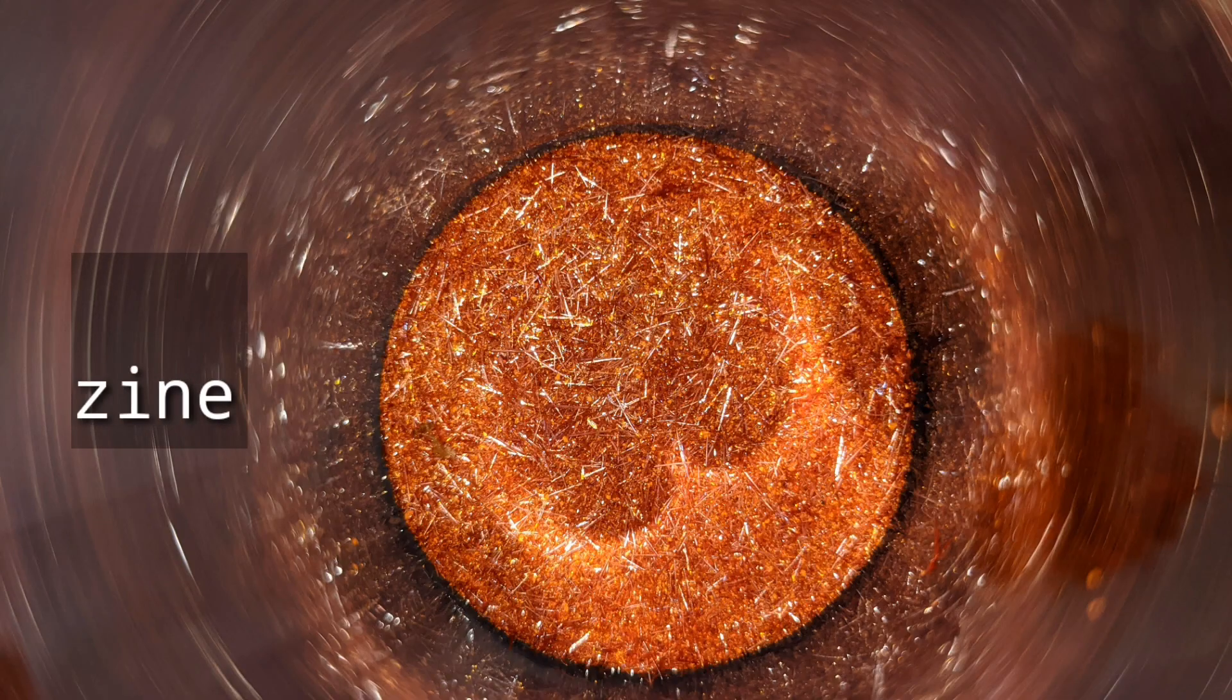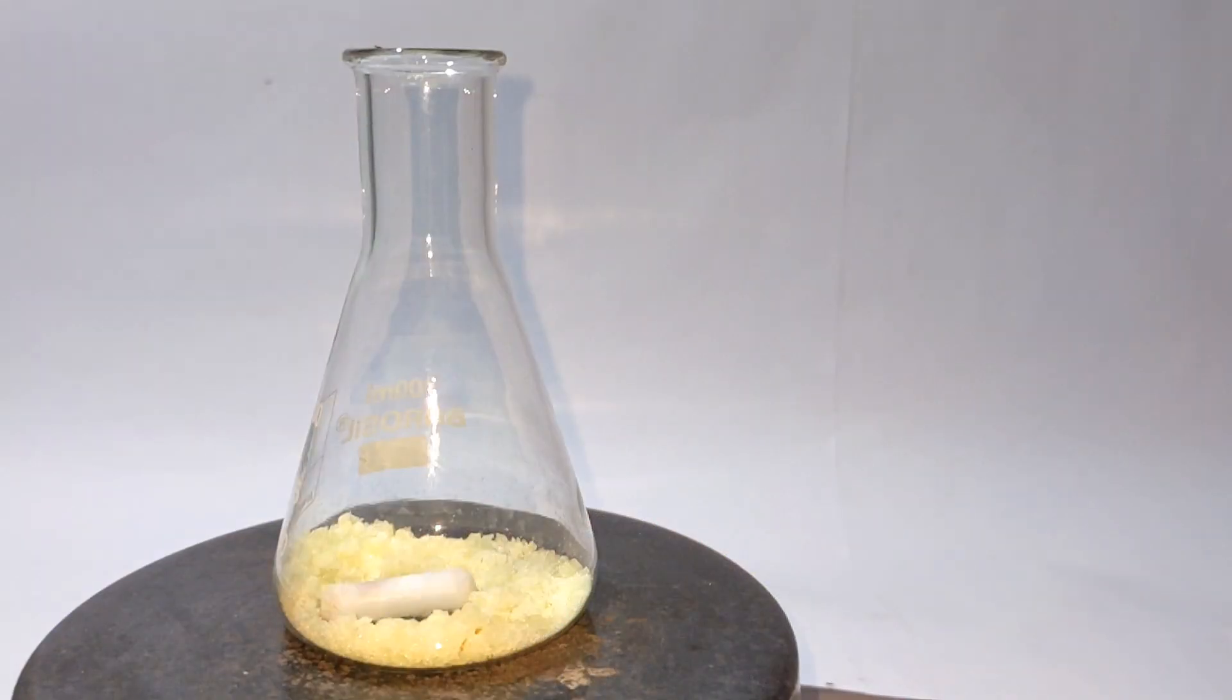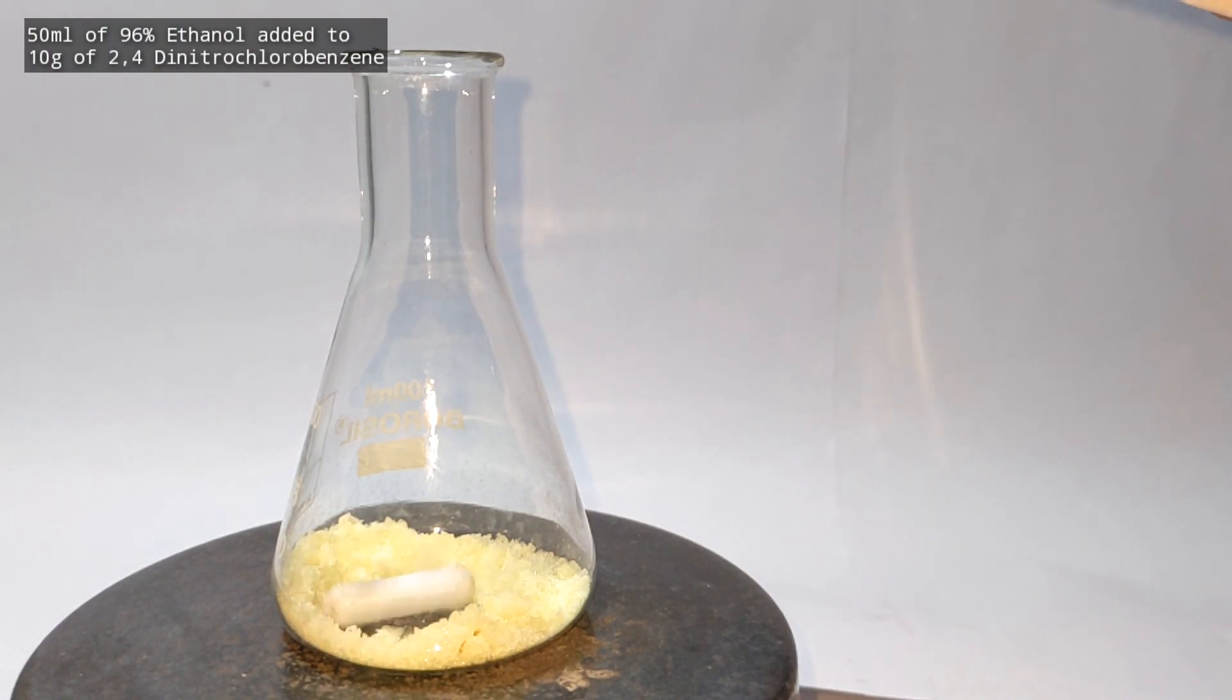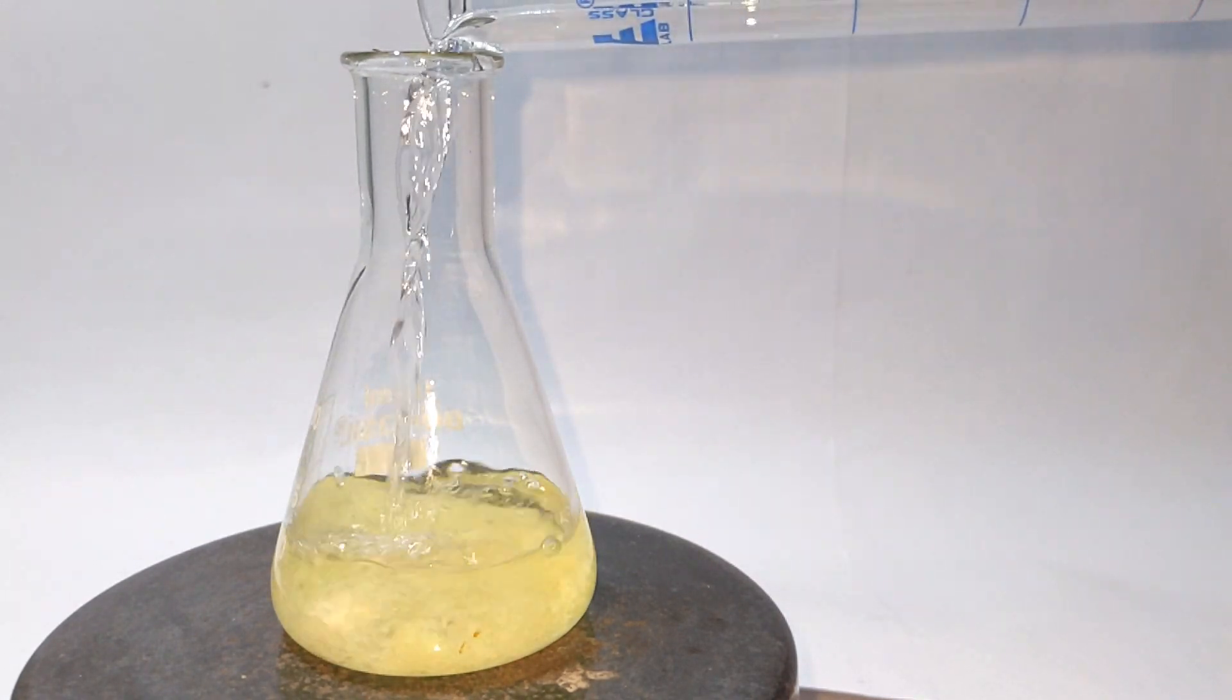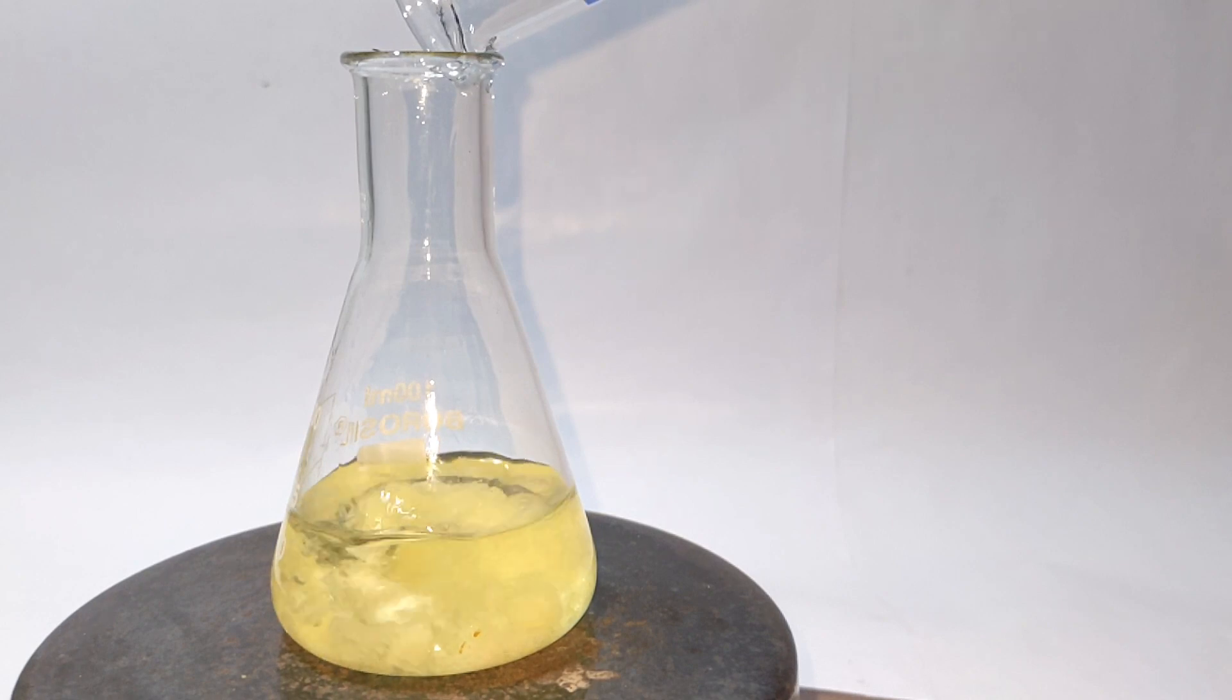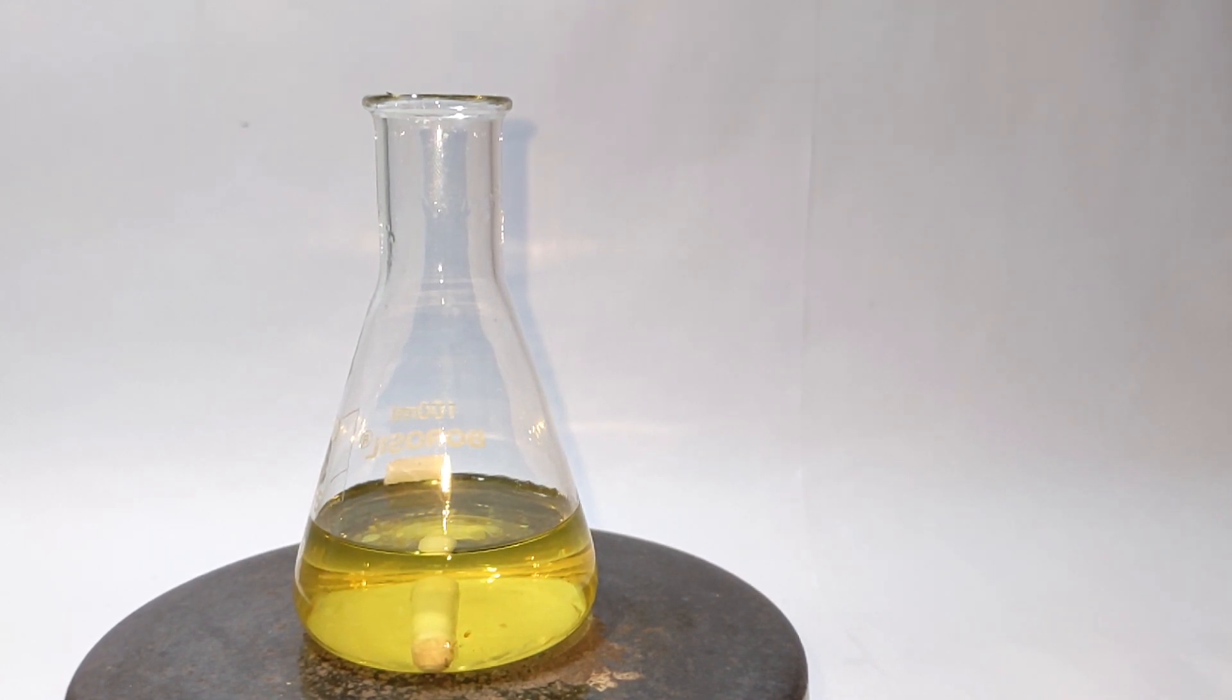Moving on to the synthesis of 2,4-dinitrophenylhydrazine. For that, 10 grams of 2,4-dinitrochlorobenzene was taken in a 100 milliliter Erlenmeyer flask then with stirring added 50 milliliters of 96% ethyl alcohol. With gentle heating and stirring everything dissolved and the solution turned clear yellow in color.